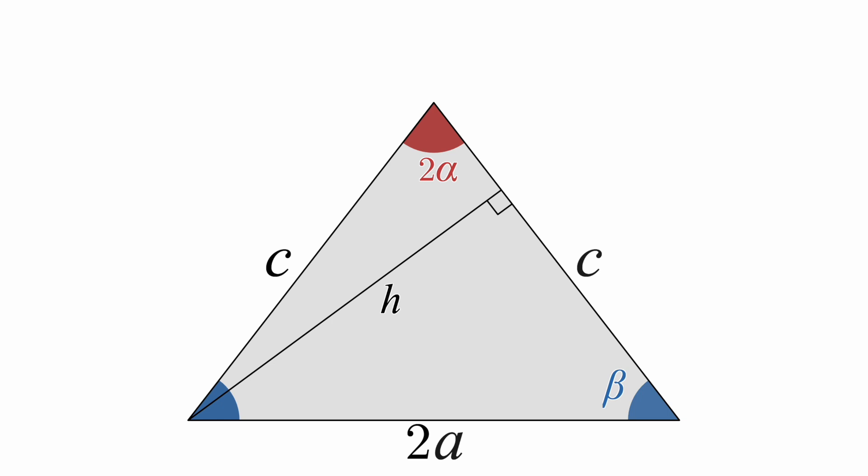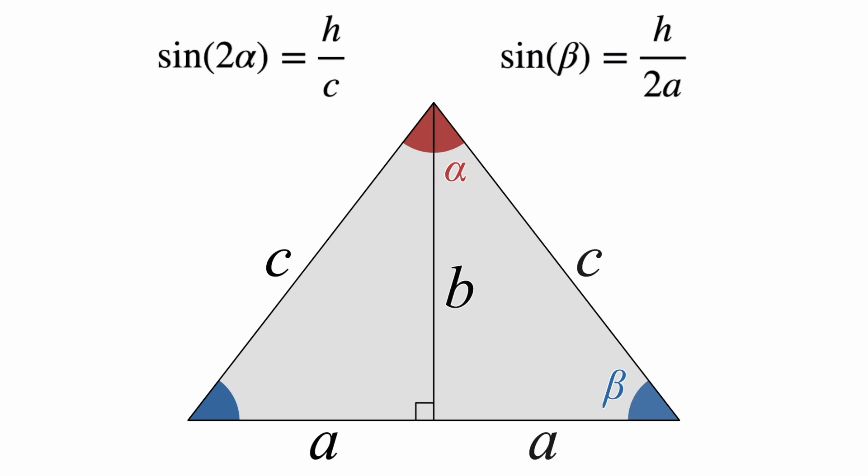What we want here is to get an expression for the sine of 2 alpha. And the sine of an angle in a right triangle is the length of the opposite leg divided by the length of the hypotenuse. So, here that would be h over c. Similarly, the sine of beta is h over 2a. And, going back to the original triangle, we see that the sine of beta is also b over c.